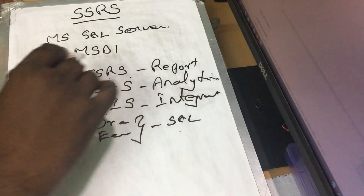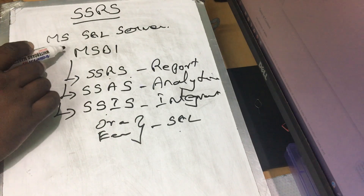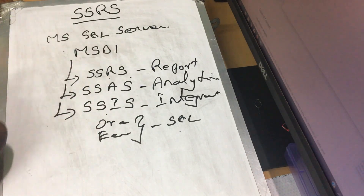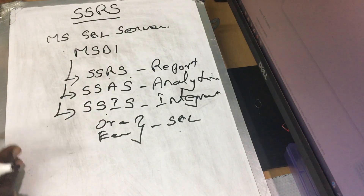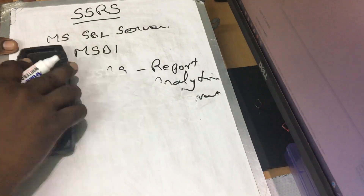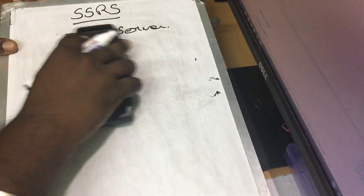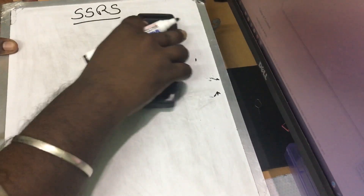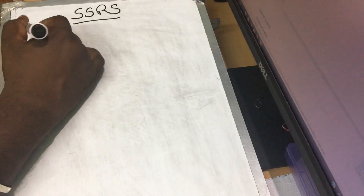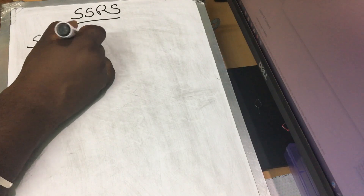This is MSBI — Microsoft Business Intelligence. So let's look at SSRS. What is SSRS? You can create different types of reports.